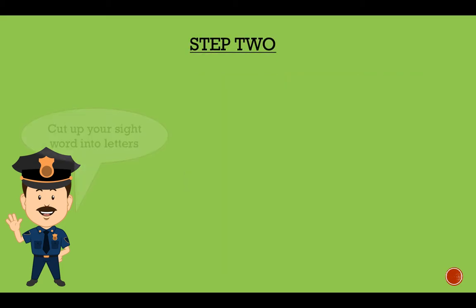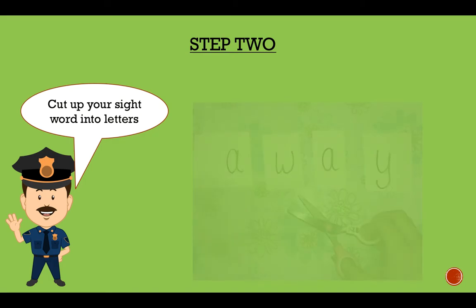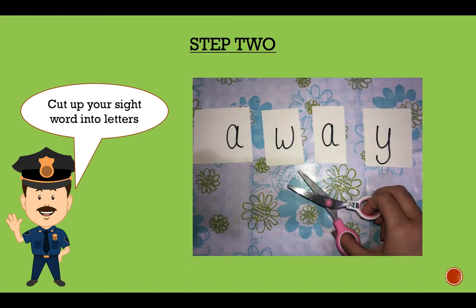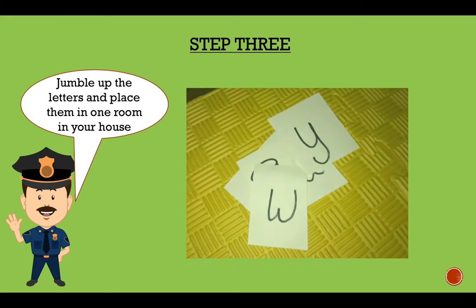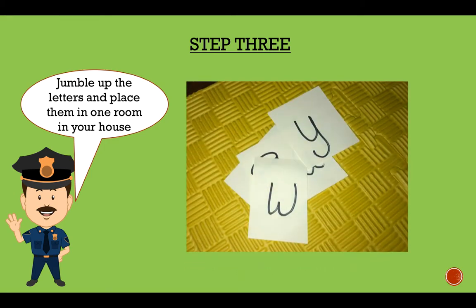Step two. You have to cut up your sight words into letters just like the picture shows. Cut it up. Okay. Step three. You're going to jumble up or mix the letters and place them in one of the rooms in your house. So jumble it up, mix it up and go put it somewhere in your house.